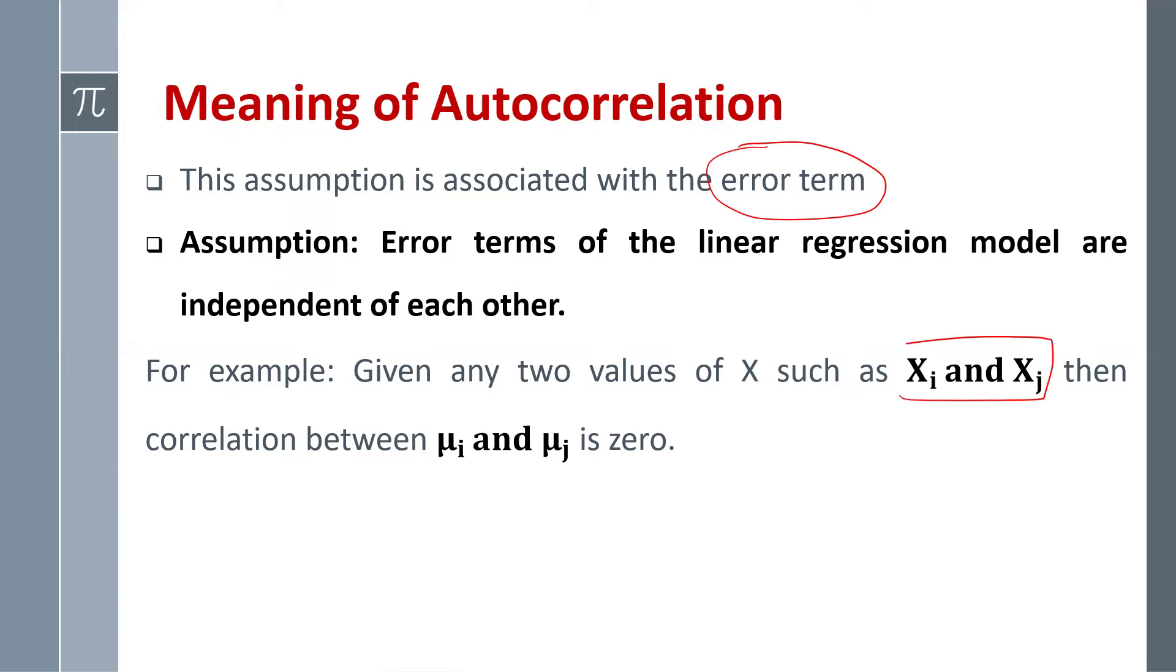That means covariance between mui and muj is equal to zero. So error terms are uncorrelated.